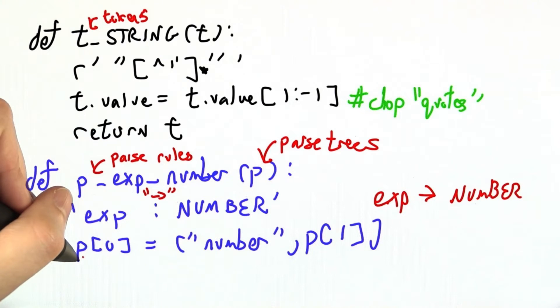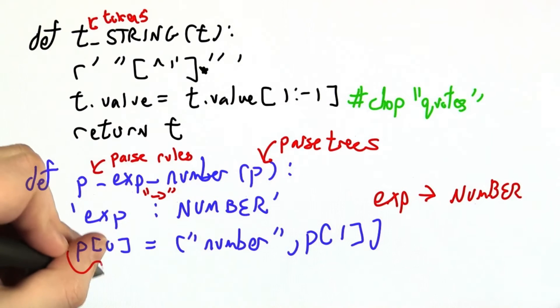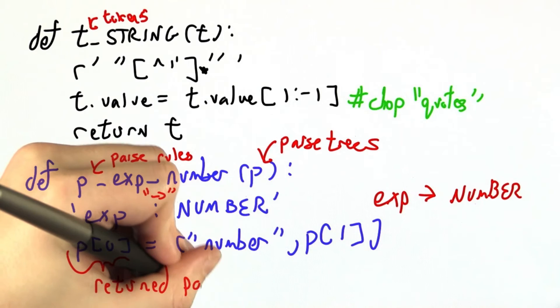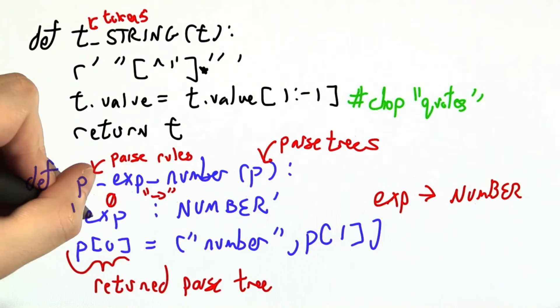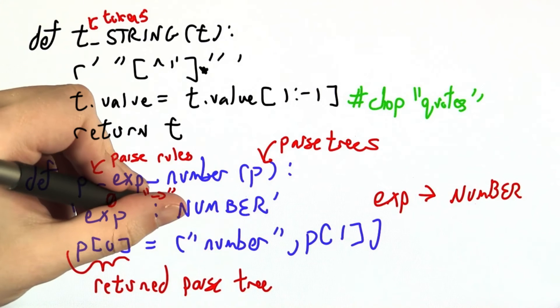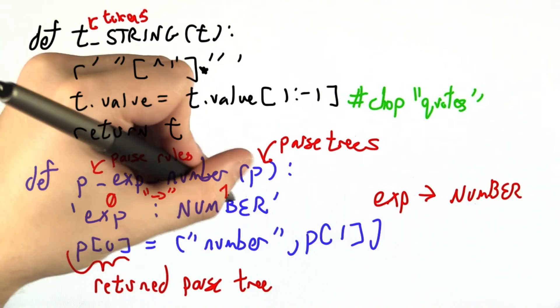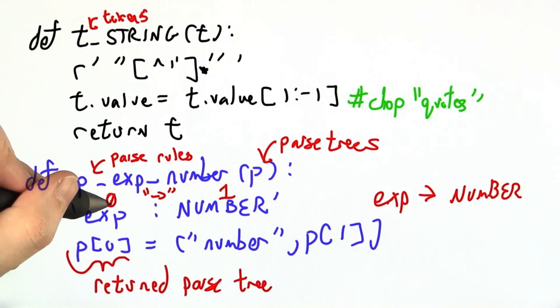And then down here we have to tell Python, or tell our parsing library, how to build up the abstract syntax tree. P0 is our returned parse tree. The numbering here is every one of these elements of our grammar rule except the colon gets a number. So the expression on the left is 0, this number over here is 1.